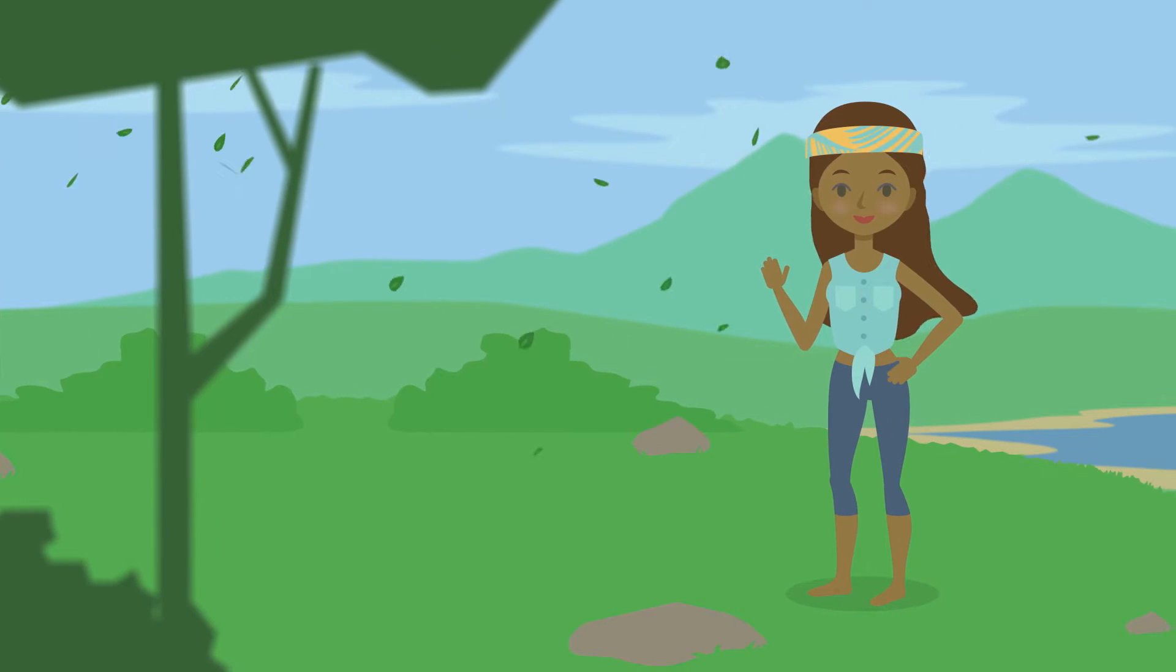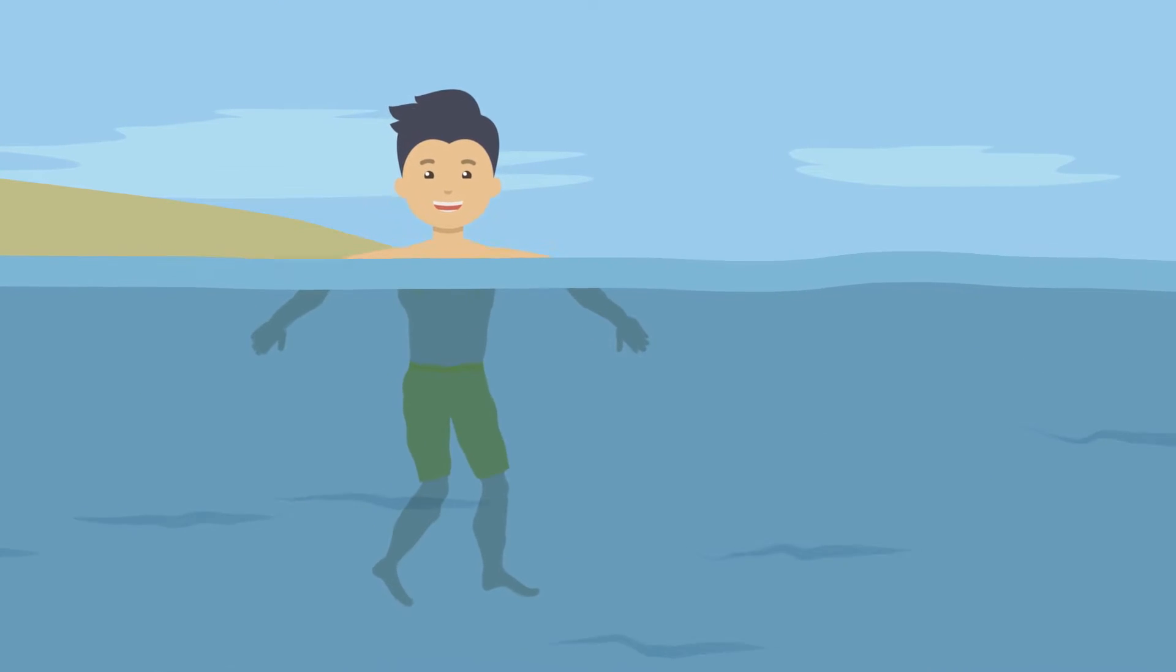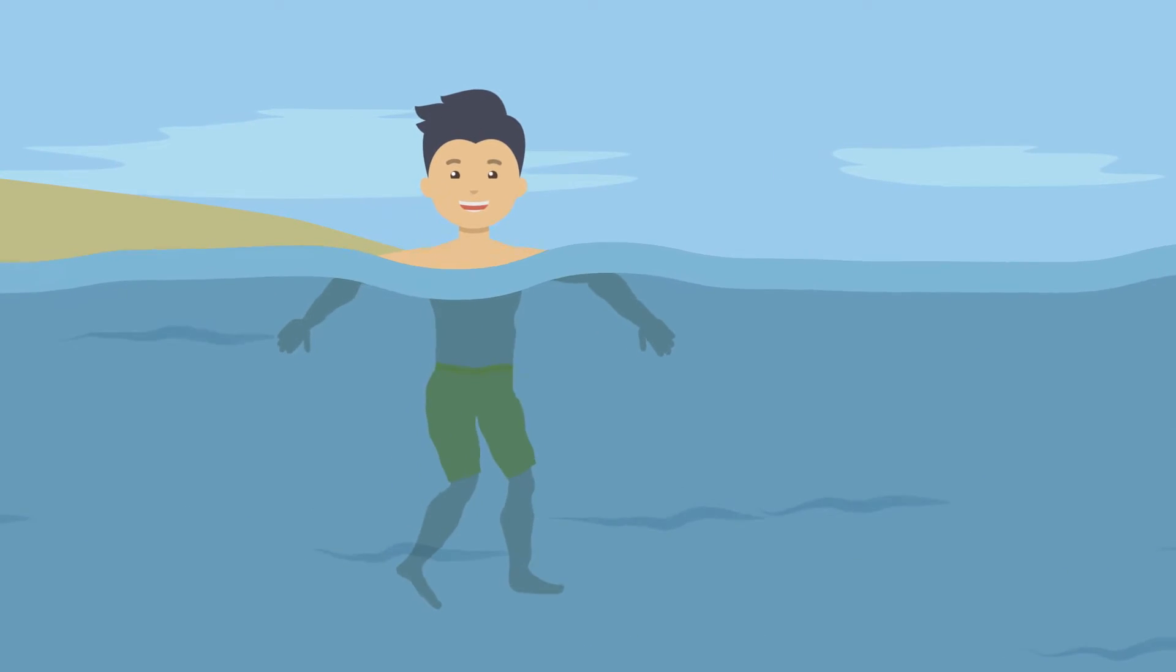When we stand outside, we will often feel the wind blowing against us. When we swim in the ocean, we may feel currents trying to push us away from our spot on the beach. We're going to talk about how these two fluids, the air and the ocean, move on a global scale and how this leads to different climate regimes around the world.